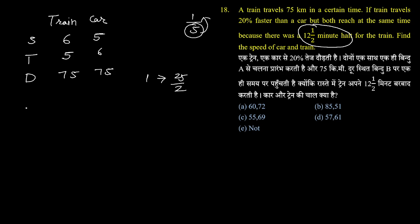My train's time and car's time differ by one unit. If the value is 25 by 2, then 5.5 into 25 by 2, but this is in minutes, so divide by 60. This gives us 5.